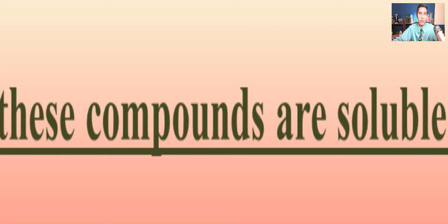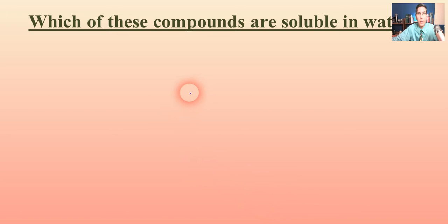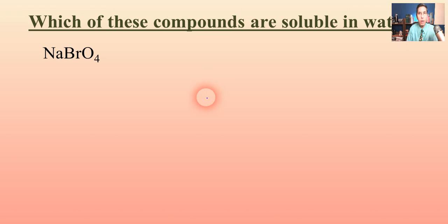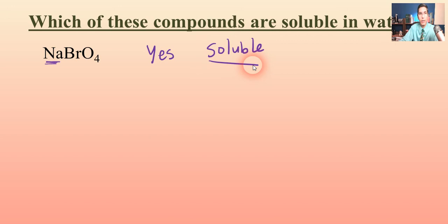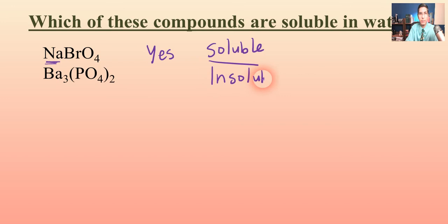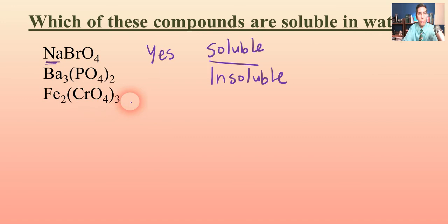Let's practice — which of these compounds are soluble in water? Will sodium perbromate dissolve? We didn't learn a rule for perbromates, but sodium is an alkali metal, so that is a yes — it is soluble. Let's try barium phosphate. Phosphates are not soluble, and the only exception would be an alkali metal or ammonium, which barium is not. So barium phosphate is insoluble.